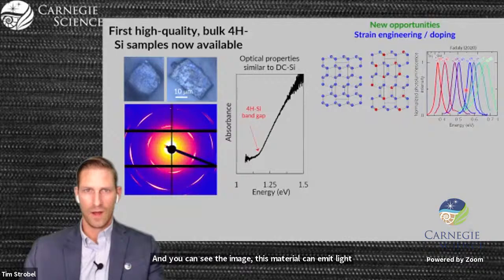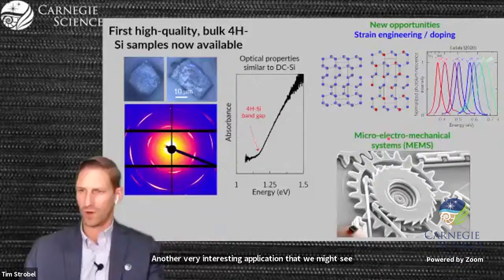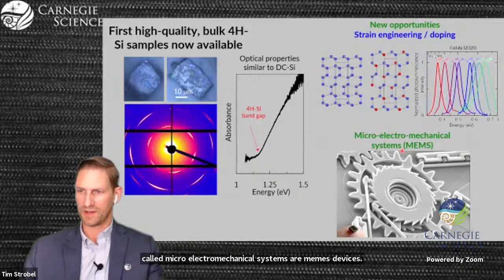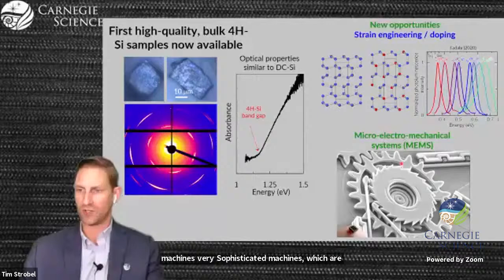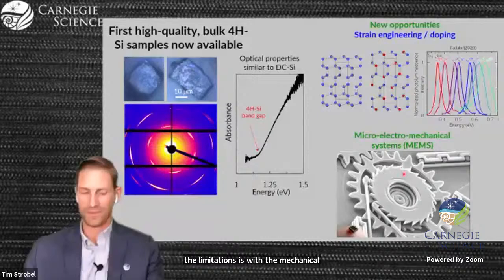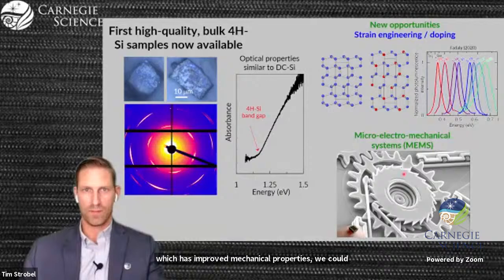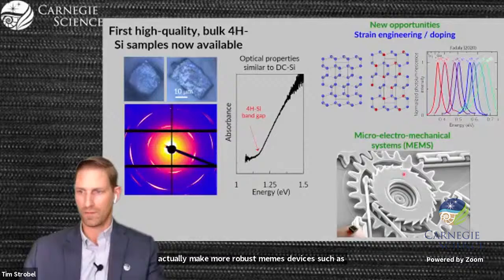Another very interesting application that we might see in the future for 4H silicon is in what's called micro-electromechanical systems, or MEMS devices. The best way I would describe these is advanced micromachines. With the 4H structure, which has improved mechanical properties, we could actually make more robust MEMS devices such as gyroscopes or resonators that could power next-generation MEMS sensors.